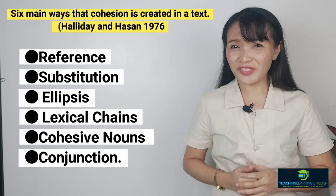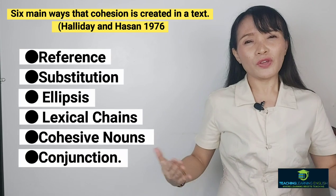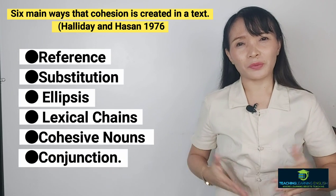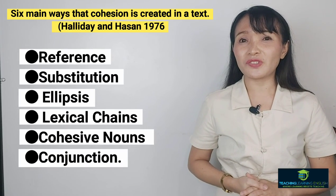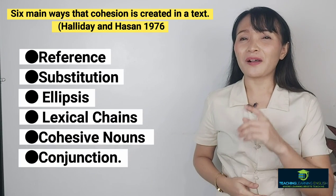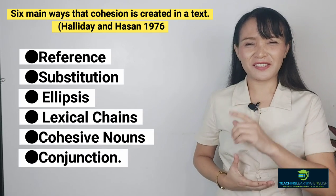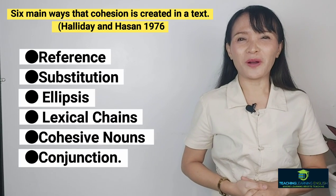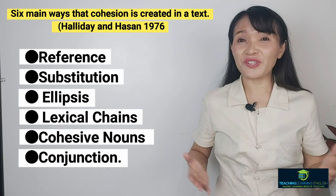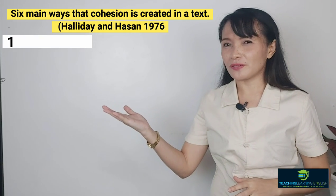These six ways are called: reference, substitution, ellipsis, lexical chains, cohesive nouns, and conjunctions. If you don't know how to use these six devices in your text structure, then you can't achieve a cohesive text. Let's discuss them one by one.